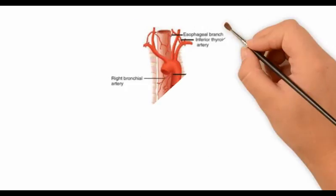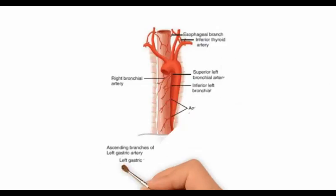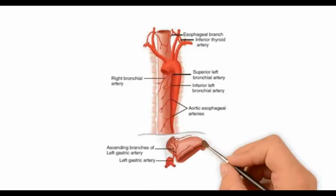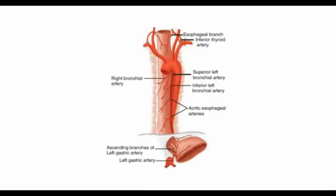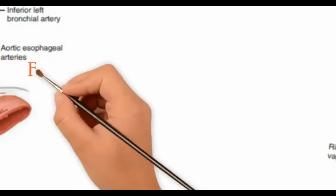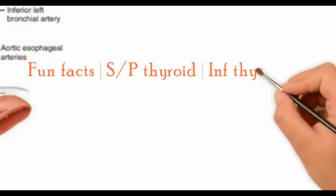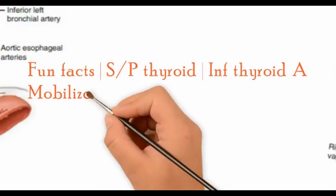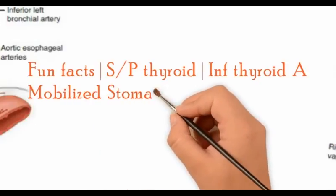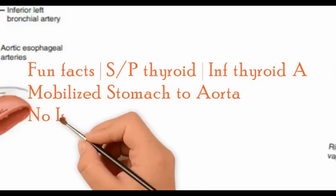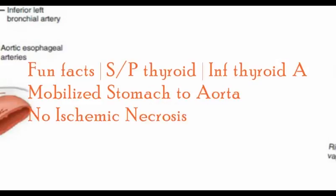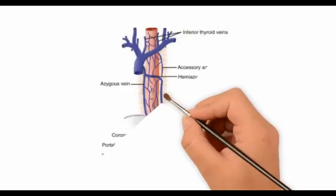The esophagus is supplied by many different blood vessels from superior to inferior. After thyroidectomy, due to ligation of the inferior thyroid artery, there is no necrosis of the esophagus. Furthermore, the esophagus can be mobilized from the stomach all the way to the aorta without any fear of ischemic necrosis.